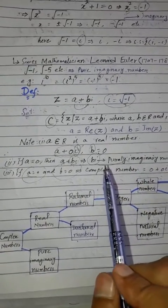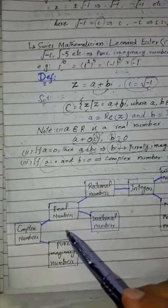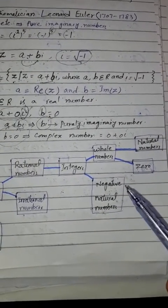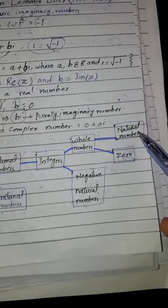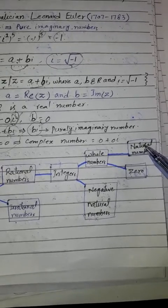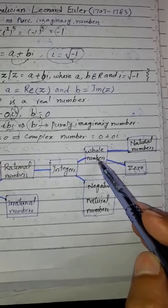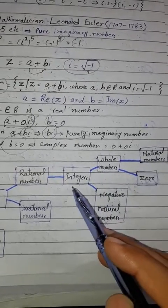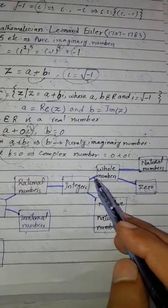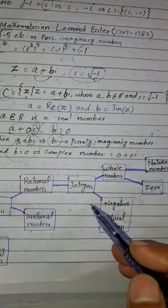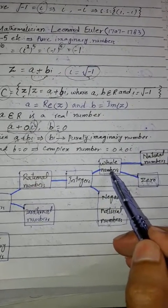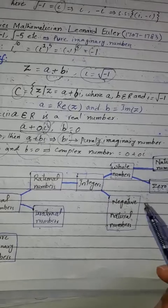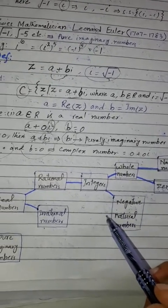Now I will show you a hierarchy of number sets. We start with natural numbers, starting from 1. When we add zero to the natural numbers, we get whole numbers. When we include negative numbers with whole numbers, we get integers — which include positive numbers, negative numbers like minus 1, minus 2, minus 3, and so on, and whole numbers.